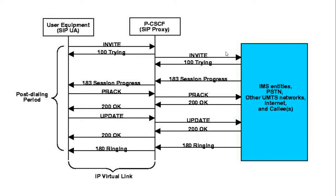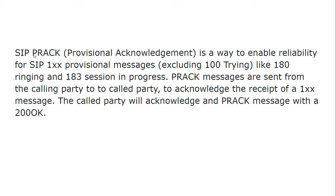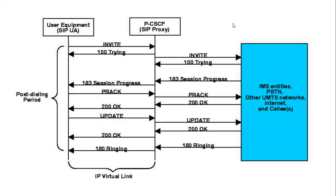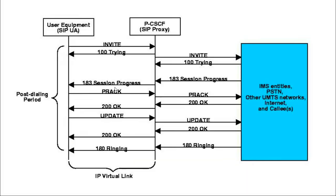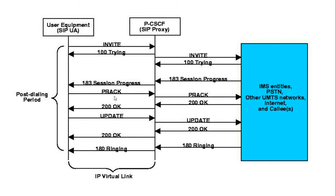Now let's look at provisional acknowledgement — this is called PRACK. Provisional acknowledgement is a way of enabling the reliability of SIP 1xx provisional messages. In a normal SIP flow — INVITE, 100 Trying, 183 Session Progress, 200 OK, ACK — the other party doesn't know whether these 1xx responses reached the A party or not. Provisional acknowledgement was introduced to solve this.